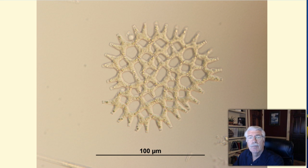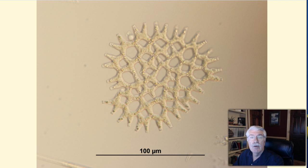Phytoplankton contain chlorophyll and require sunlight to live and grow. Many phytoplankton species are buoyant and remain near the water surface during the day where sunlight penetrates the water.